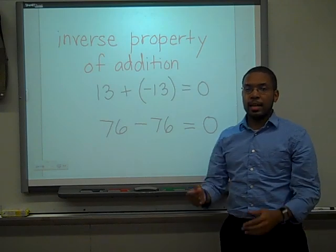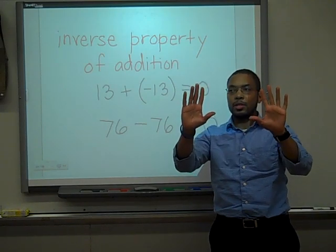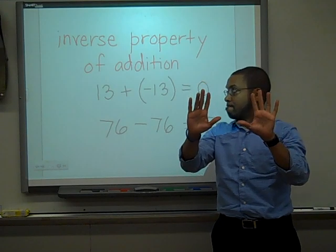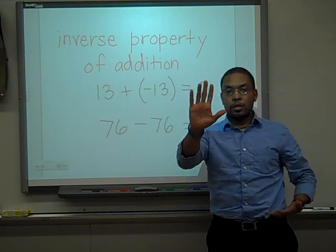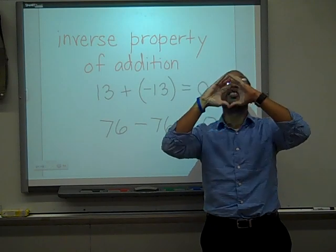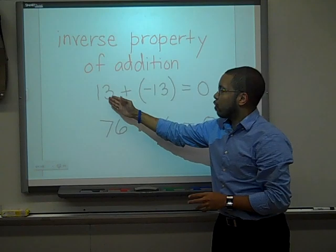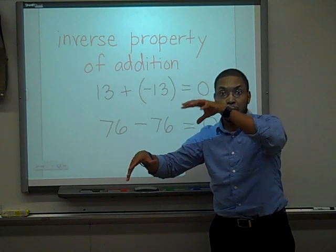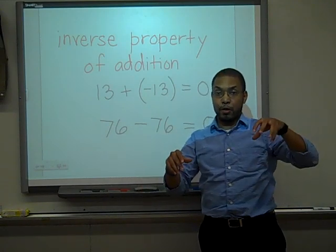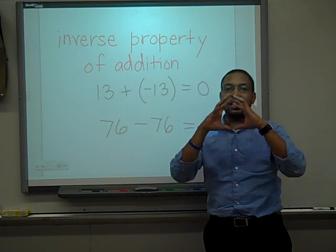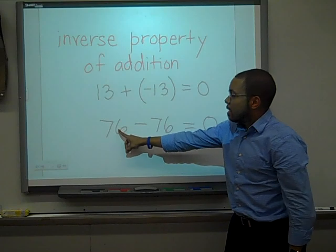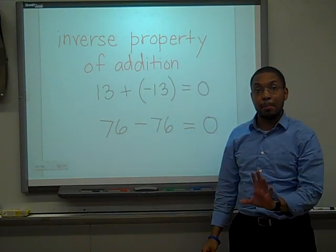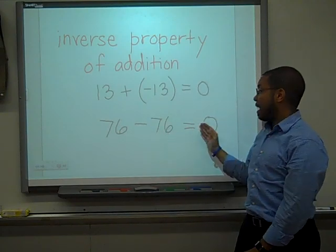The inverse property of addition. Look at the direction of my thumbs — the inverse property of addition means we are literally going to be taking the opposite. If you add a number to its opposite, you will get 0 — it will always give you 0. 13 plus — what's the opposite of 13? Think on the number line. The opposite of 13 is negative 13. So if I add 13 to negative 13, I will get 0. 76 subtract 76 equals 0, because the opposite of 76 is negative 76, and I get 0.